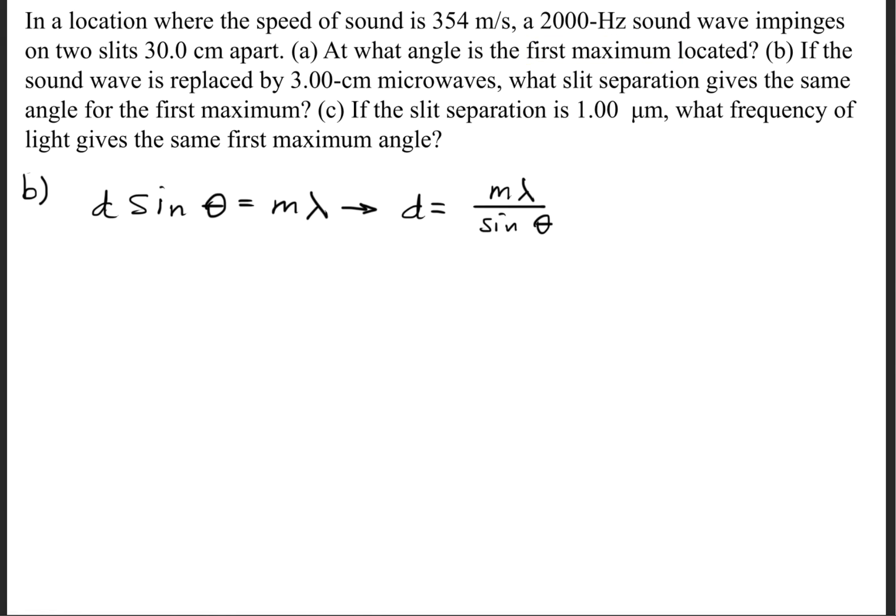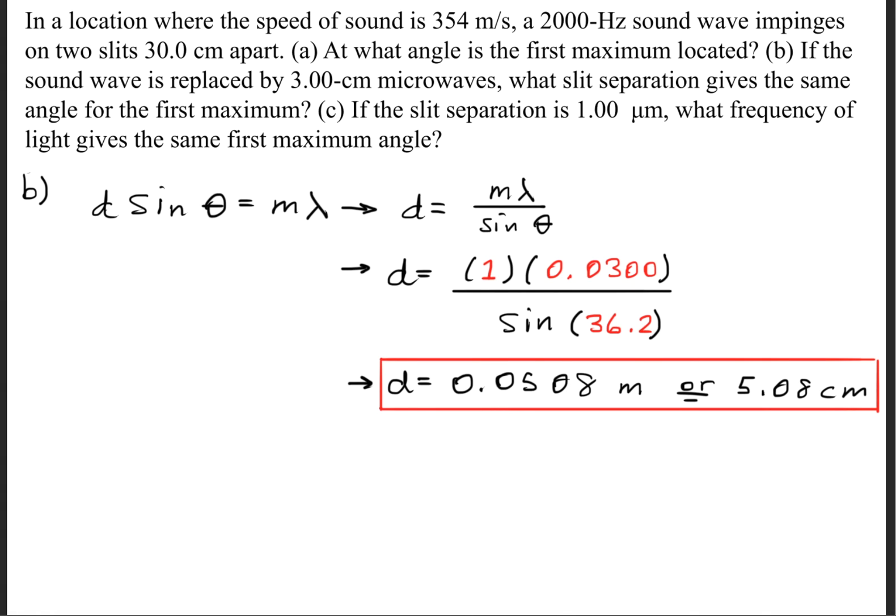Now let's begin part B by using the constructive interference formula. We'll rearrange and solve for the slit separation distance. When we plug in the variables, we get a slit separation distance of 0.0508 meters, or 5.08 centimeters.